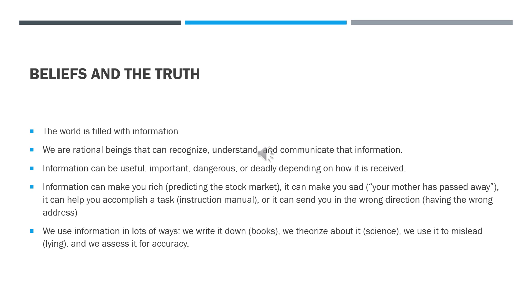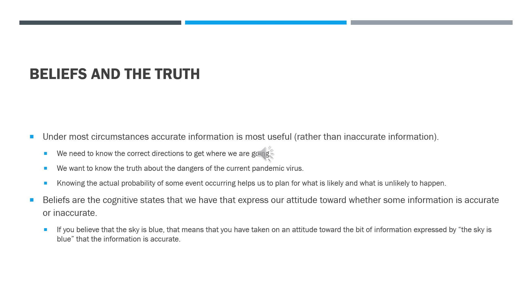We write it down, we talk about it, we theorize about what information is correct or incorrect, we use it to mislead one another sometimes when we lie, and we assess it for accuracy. Under most circumstances we want accurate information — we find information most useful when it's accurate, so we can act on it rather than on inaccurate information.